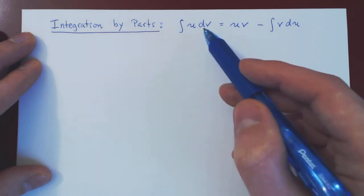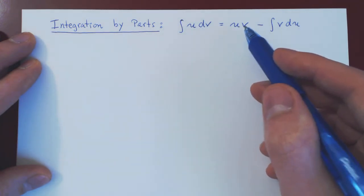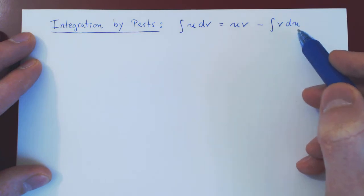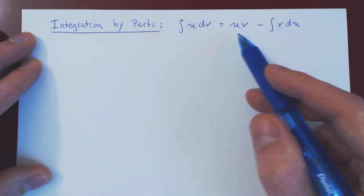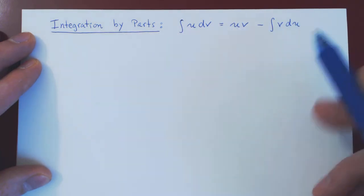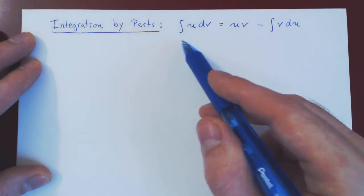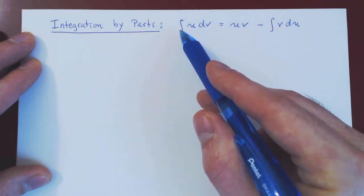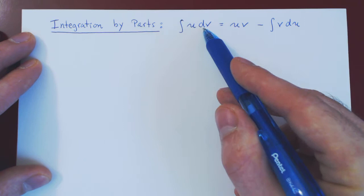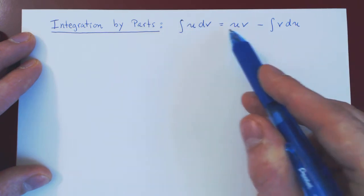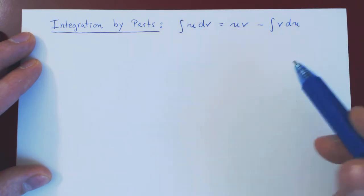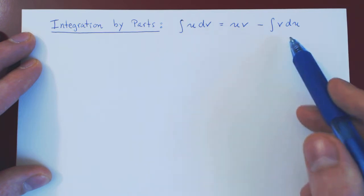Here's the result: the integral of u dv equals uv minus the integral of v du. This form is the easiest to remember. We'll have an integral that will be the integral of u dv, and we'll go to this form, and we'll see through examples why this is sometimes very useful.